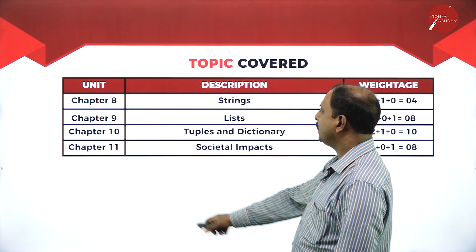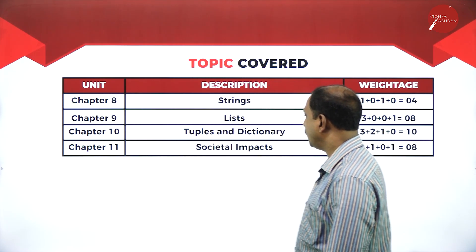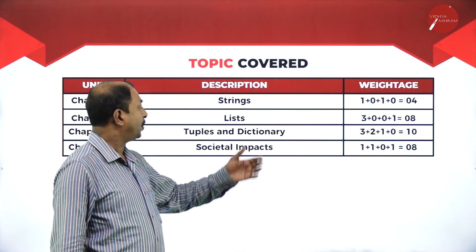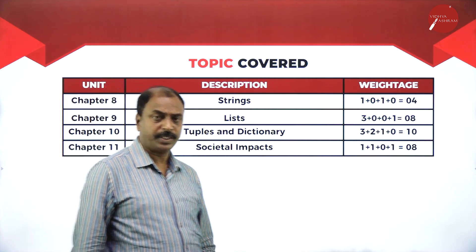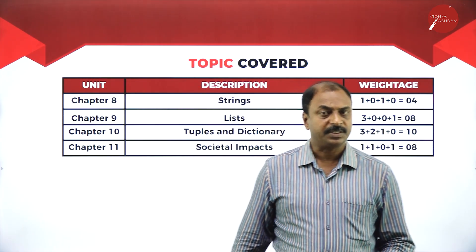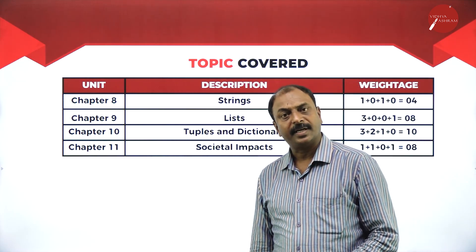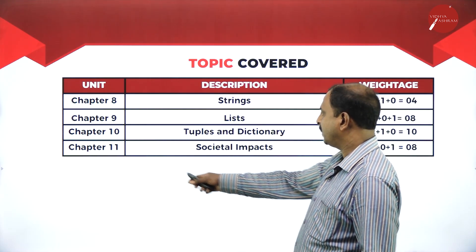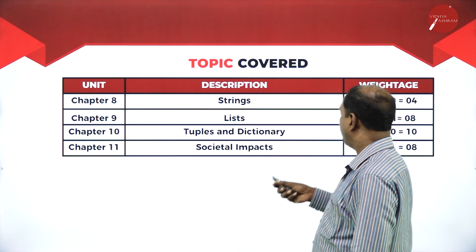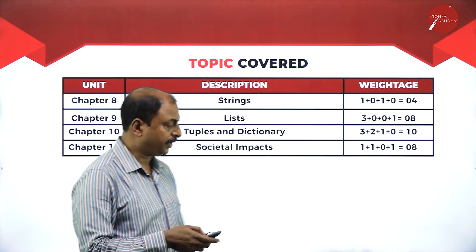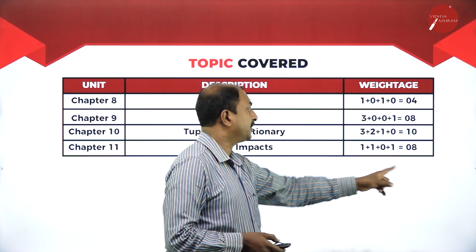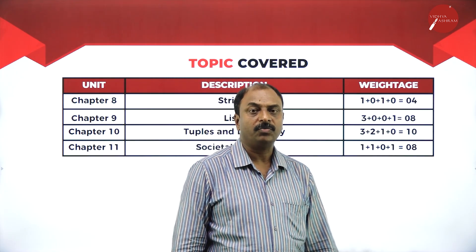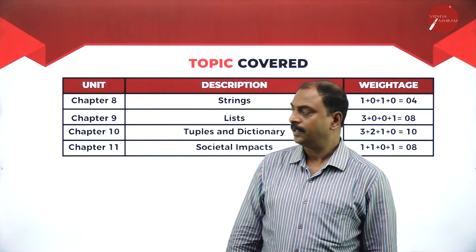Chapter 11 is Societal Impacts, where students learn definitions of common terms related to computer science, such as cybercrime and hacking. These are the weightages given for all chapters, completing the theoretical part of the Computer Science paper.